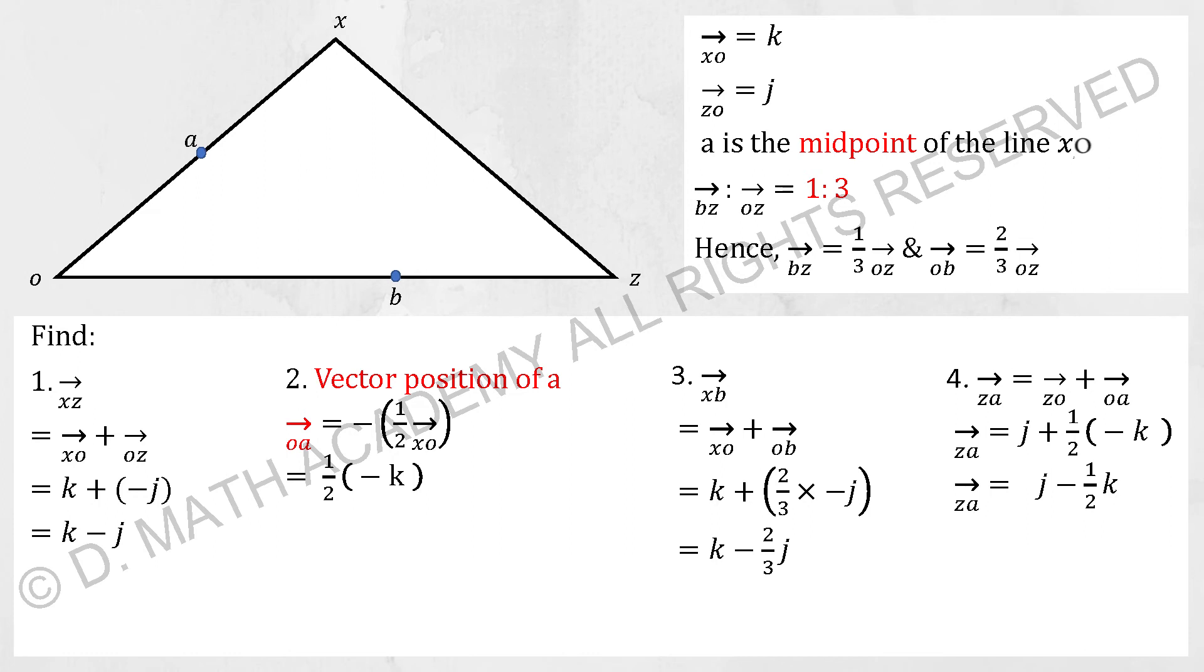So for the first question here, we have finding XZ. So for us to get there, you have to map out the point that we go through. XO plus OZ equals to K plus bracket negative J.